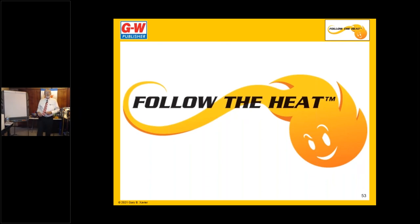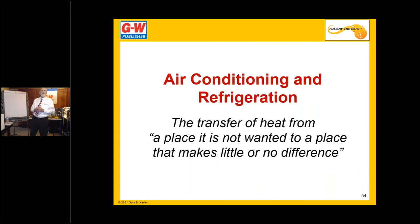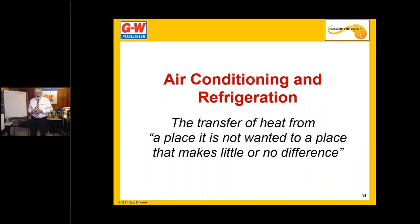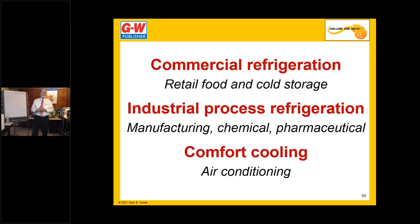That is our foundation. We can build on that now — we have Mother Nature's rules, and we can talk about our equipment that we use to transfer heat. In air conditioning and refrigeration, it's heat transfer from a place we don't want it to a place that makes little or no difference. In heating, it's heat transfer from a space where we have it to a place we want it. When we transfer heat for air conditioning and refrigeration, we can do it for commercial refrigeration, industrial process refrigeration, or comfort cooling — different EPA rules apply, but it's all the same process.